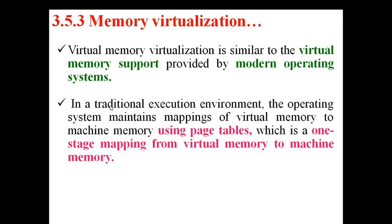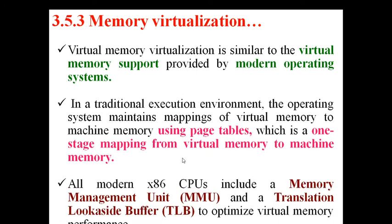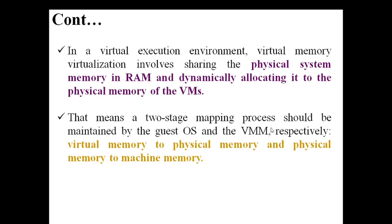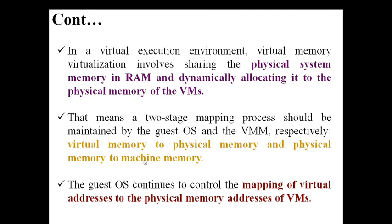In a traditional execution environment, the operating system maintains mappings of virtual memory to machine memory using page tables — converting virtual memory to physical memory, which is a one-stage mapping process. In virtualization, we need a two-stage mapping process that must be maintained by the guest OS and VMM respectively: virtual memory to physical memory conversion, and physical memory to machine memory conversion. The guest OS controls the mapping of virtual addresses to physical memory addresses, and the VMM controls physical addresses to machine address conversions.